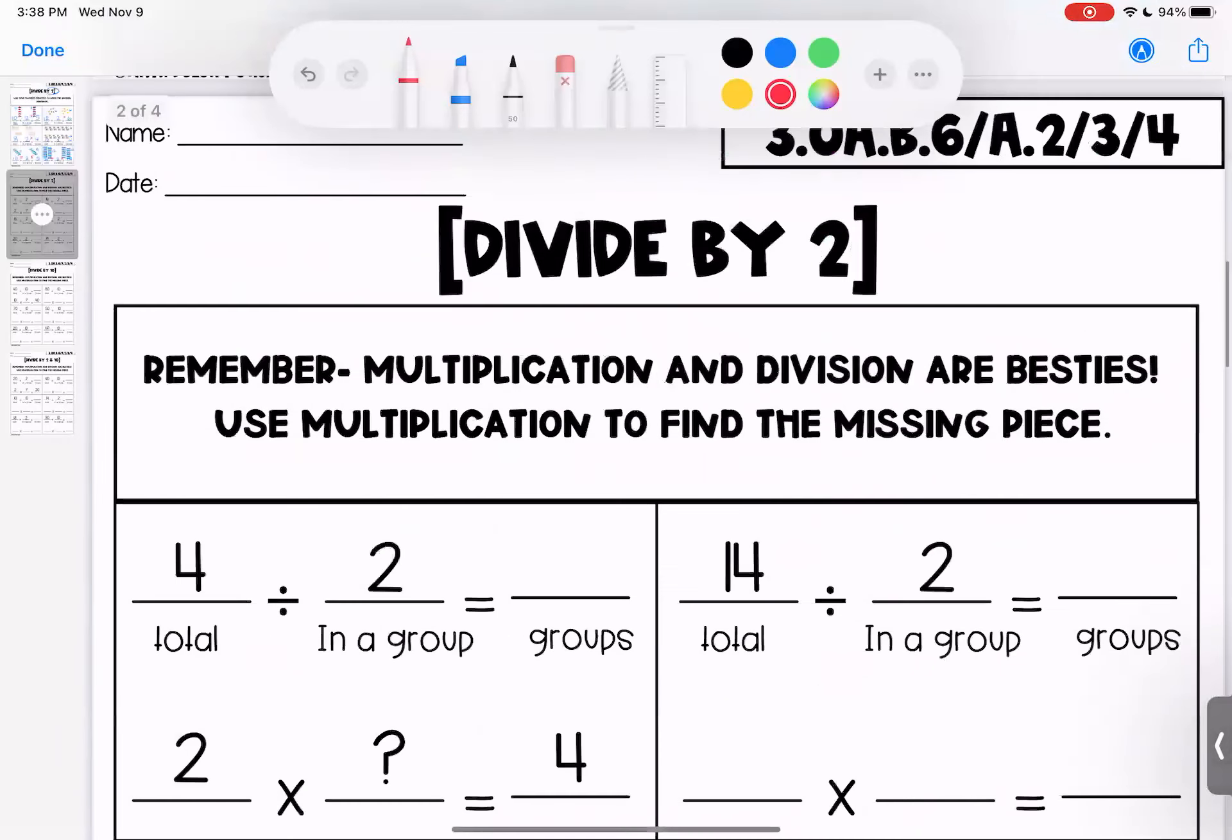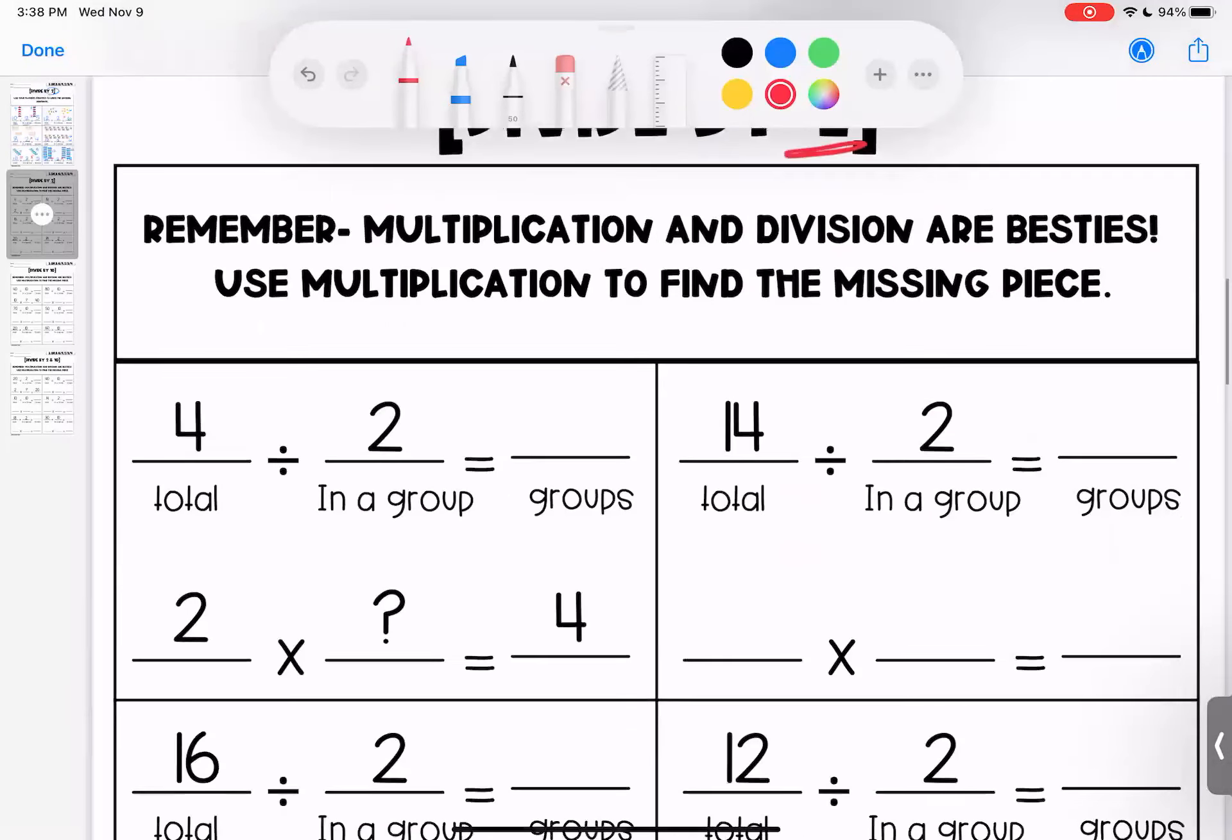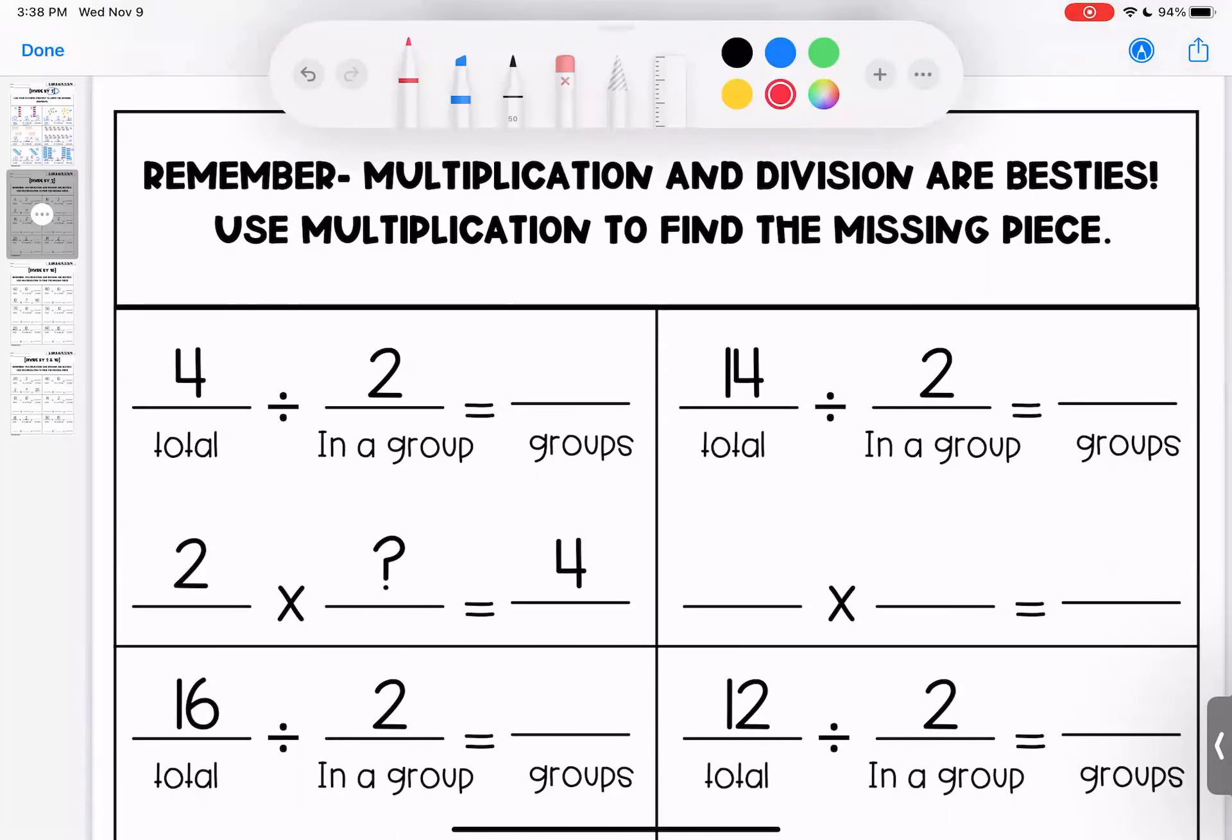All right, love bugs, page two, we're still dividing by two, but this time we took away the visual and we're reminding ourselves that multiplication and divisions are besties. We can use multiplication to find the missing piece.